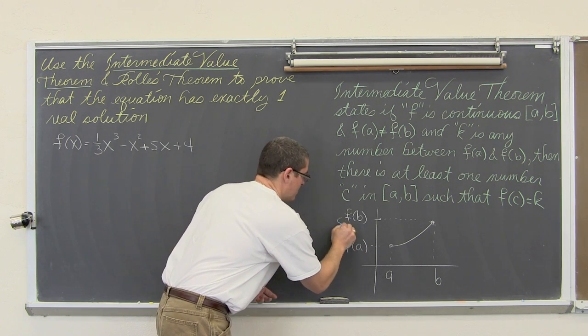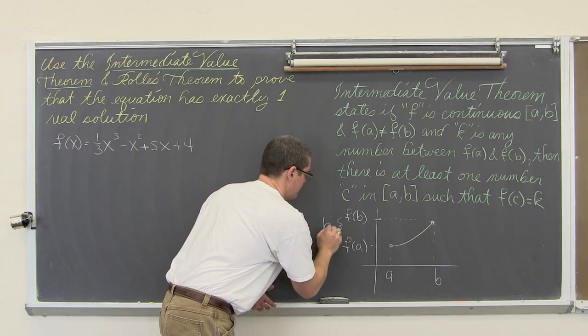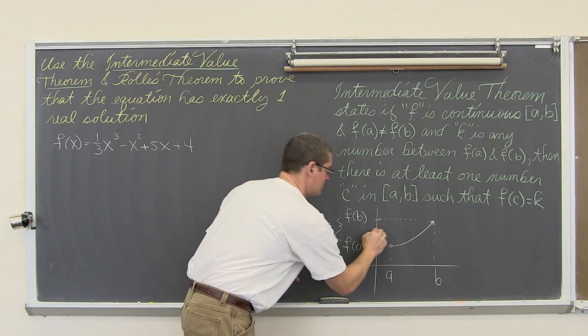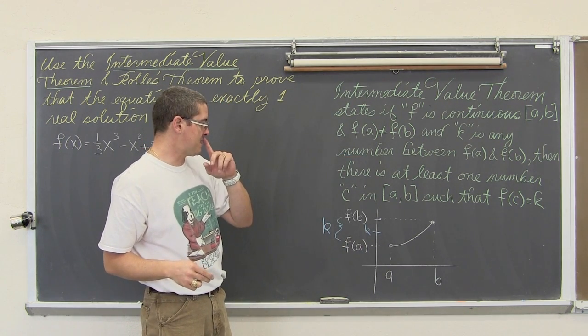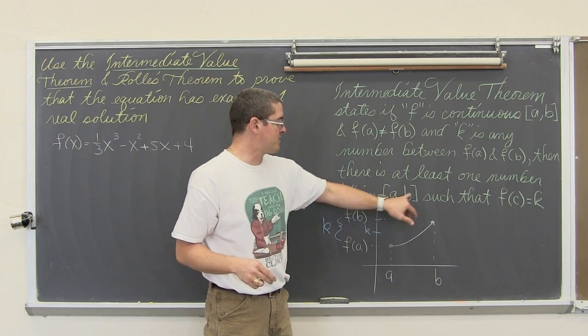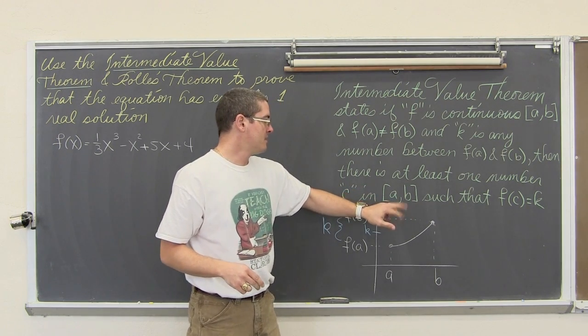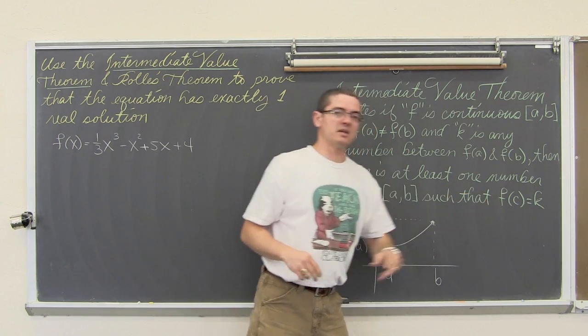So k is some y value between f of a and f of b. So k is somewhere within this interval. Maybe it is right there. So then there is at least one number c in the interval, the closed interval between a and b.